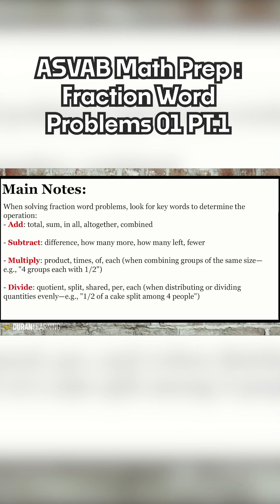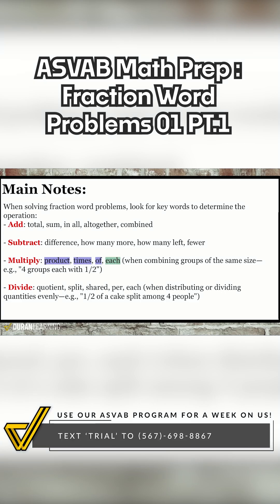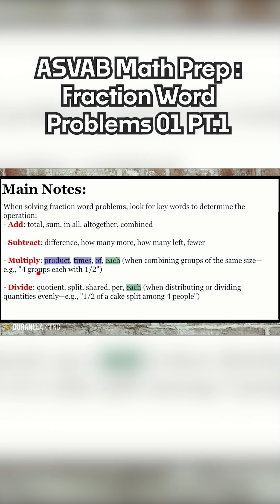Now we just have multiplication and division to go over. When it comes to multiplication, remember that the word "of" — when you're saying we need this many of that — that's going to indicate multiplication, as we saw in yesterday's class. We also have product or times. But more importantly, the scariest one of them all is going to be the word "each." So when you see "each" and you're trying to find the grand total, combining groups of the same size — like four groups each with half a piece — that's going to be multiplication.